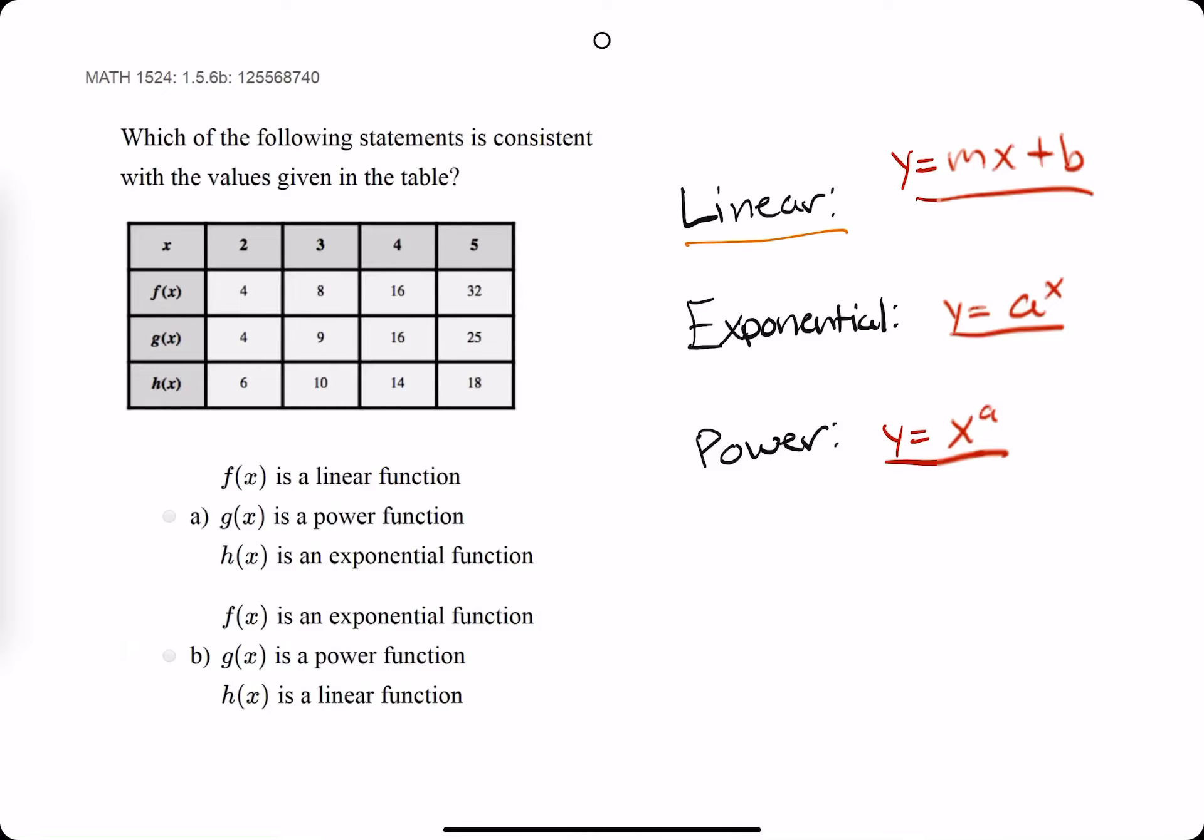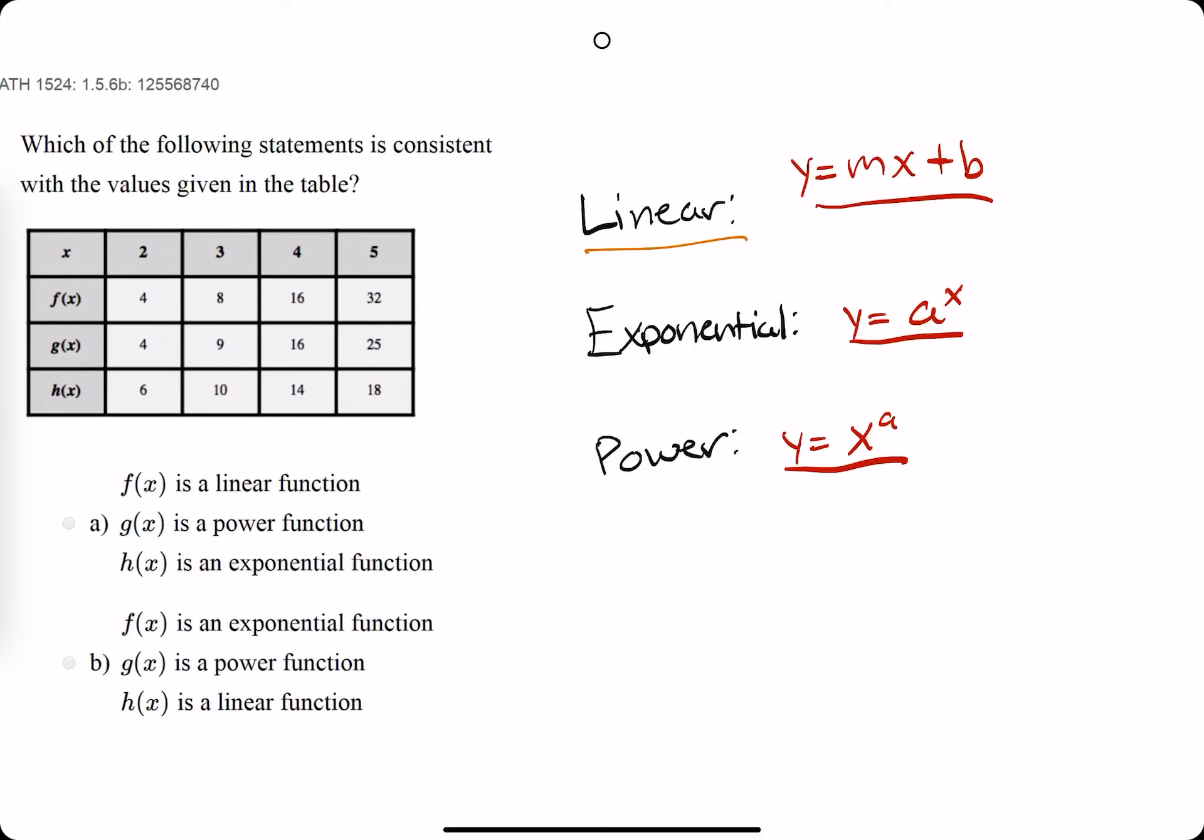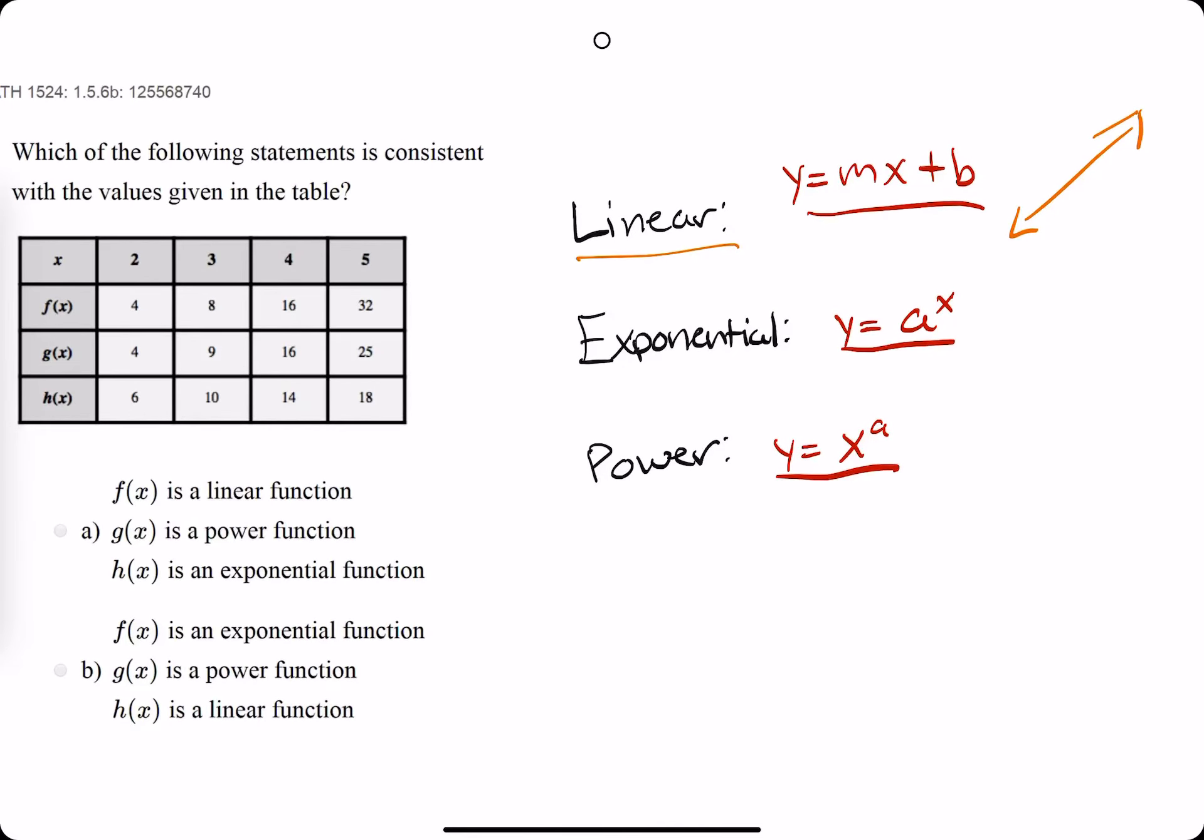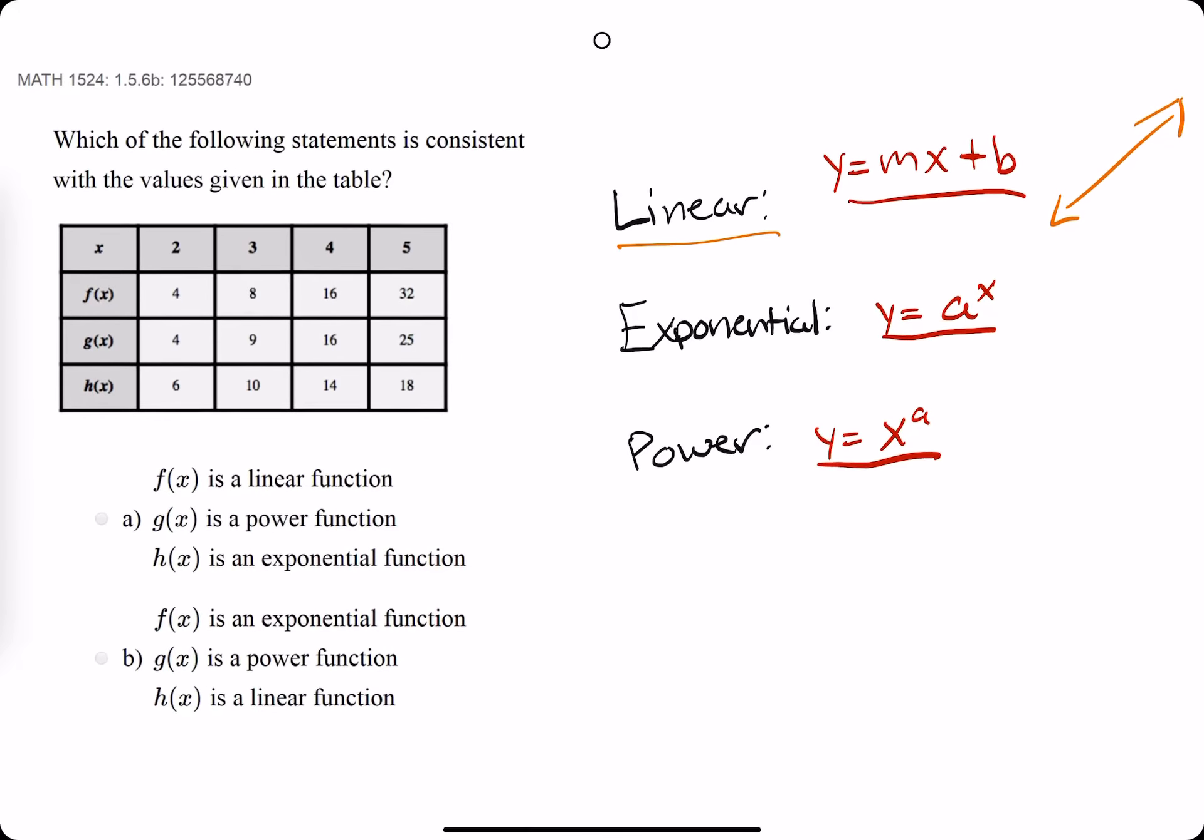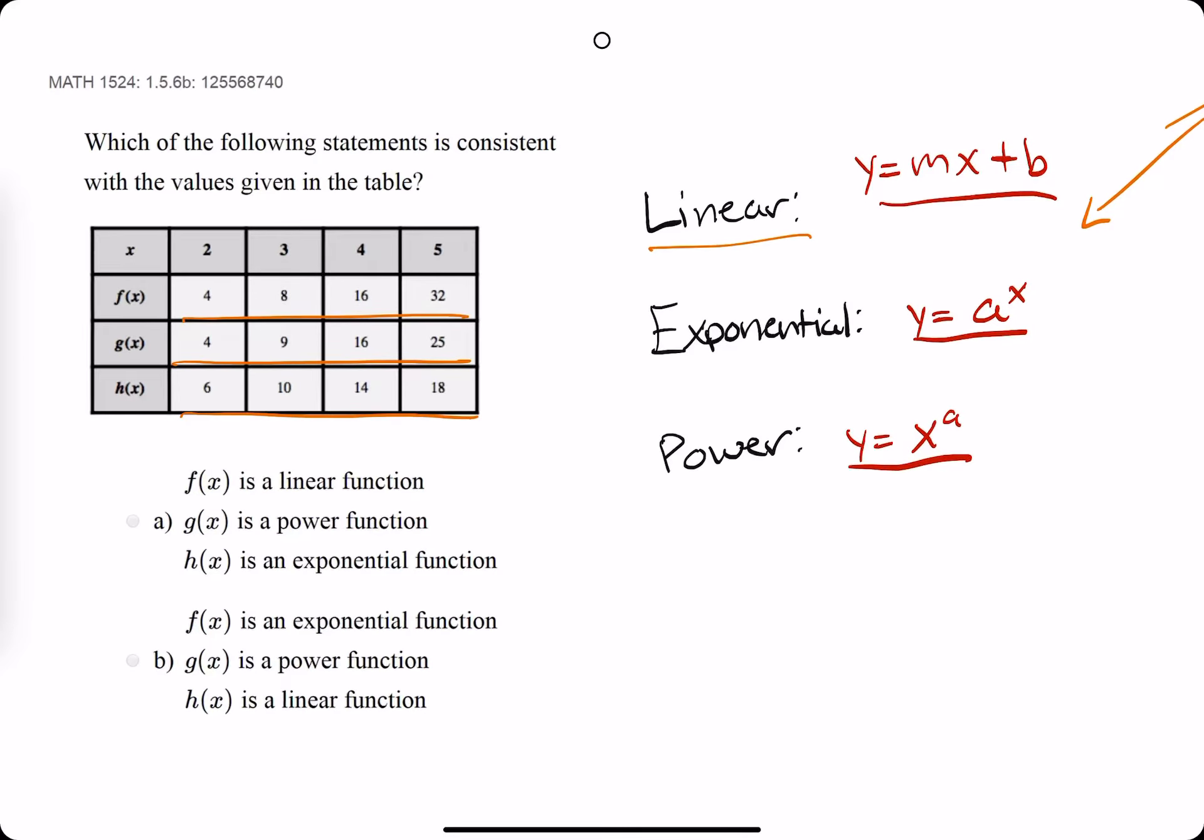So the first thing I look for is the linear function, or y equals mx plus b. It's an equation of a line, which means it has the same slope, or it's increasing or decreasing at the same rate the entire time. So I look for the values in the table that are increasing or decreasing at the same rate. What we're really looking for in terms of patterns is, is it increasing by the same amount from cell to cell?